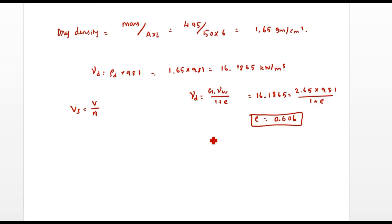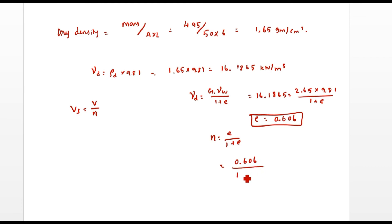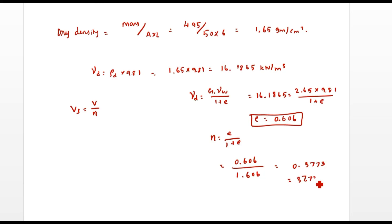Now we have to find the porosity N from the void ratio E using the formula: N = E / (1 + E). So N = 0.606 / (1 + 0.606) = 0.606 / 1.606, which gives N = 0.3773, that is 37.73%.